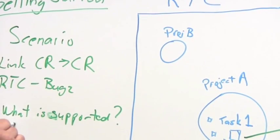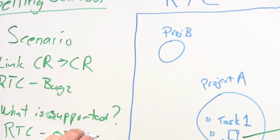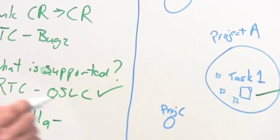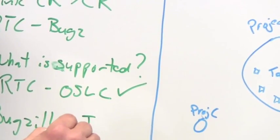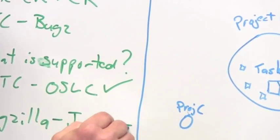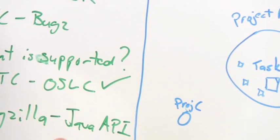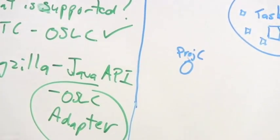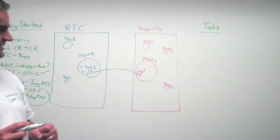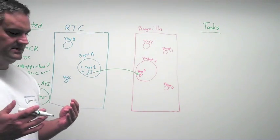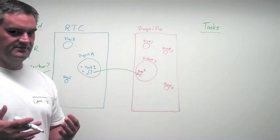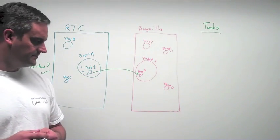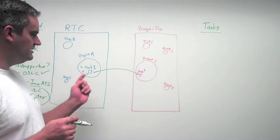RTC, OSLC, there's a check mark there. Bugzilla, we have a couple different options there. We have a Java API that we're going to use, and we'll have to build an OSLC adapter. That'll be the focus of what we'll talk about here, how do we get this link to exist. So we start from a Rational Team Concert project. Within that project, we have already selected a task. We know we want to associate it with some bug somewhere in some Bugzilla server. In order to achieve this integration, we need to break this down a little bit.